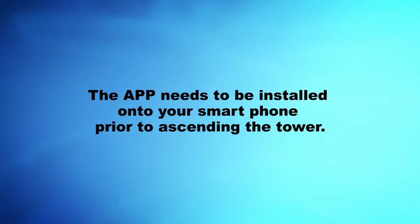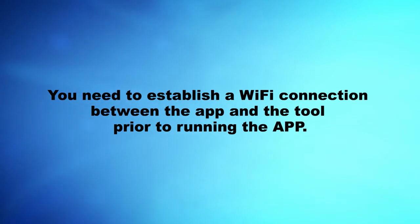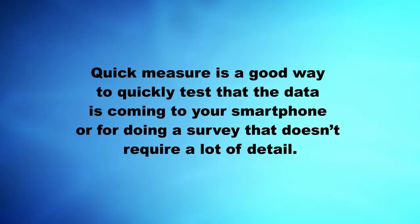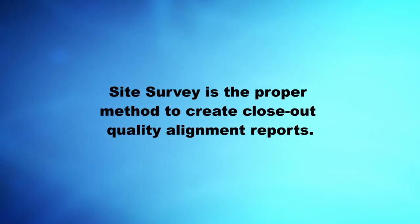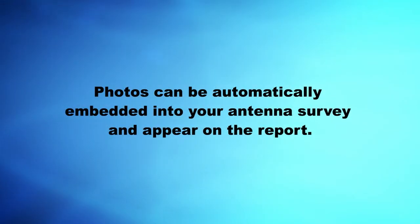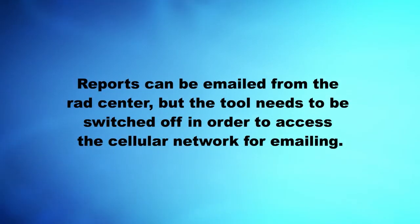Key Point Review: The app needs to be installed onto your smartphone prior to ascending the tower. You need to establish a Wi-Fi connection between the app and the tool prior to running the app. Quick Measure is a good way to quickly test that data is coming to your smartphone or for doing a survey that doesn't require a lot of detail. Site Survey is the proper method to create closeout quality alignment reports. Photos can be automatically embedded into your antenna survey and appear on the report. Reports can be emailed from the RAD Center, but the tool needs to be switched off in order to access the cellular network for emailing.